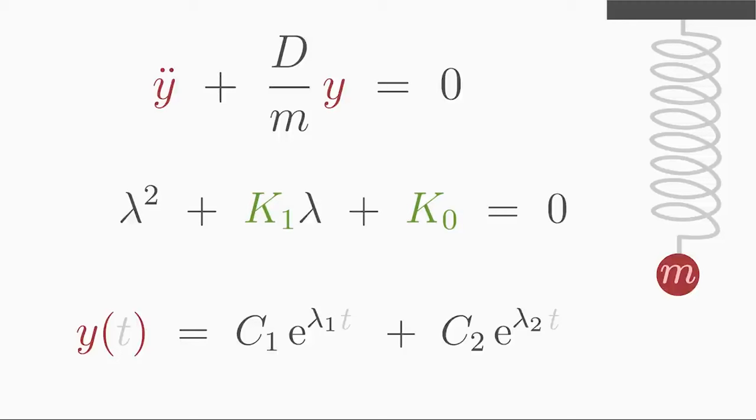Then the coefficient in front of the first derivative. Since the first derivative is missing in the differential equation, the lambda term is absent as well. Next up is the coefficient D over m that is in front of the searched function. This coefficient stands alone in the characteristic equation. Altogether, the characteristic equation reads lambda squared plus D over m is equal to zero.